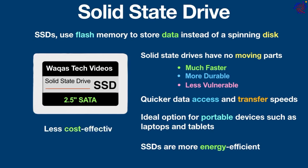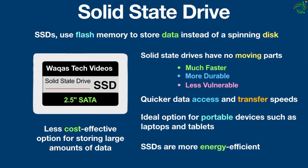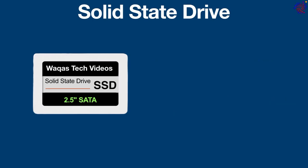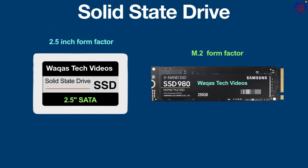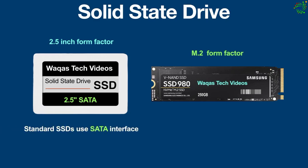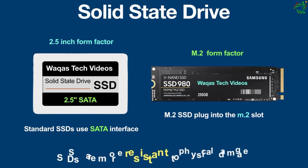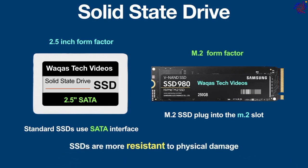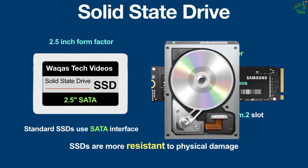SSDs are generally more expensive than HDDs, making them a less cost-effective option for storing large amounts of data. SSDs come in different form factors: the 2.5 inch form factor and the M.2 form factor. Both store data on flash memory, but connect to the motherboard using different interfaces — standard SSDs use the SATA interface just like hard drives, while M.2 SSDs plug into the M.2 slot on the motherboard. SSDs are also more resistant to physical damage; if you drop a hard drive it could crash the disk and you lose all the data.